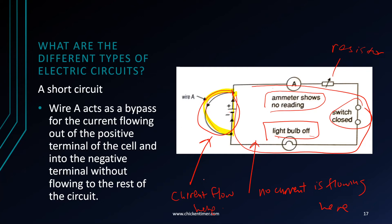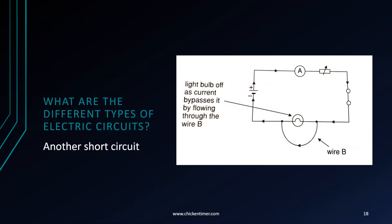Usually in short circuits the current is very high. Here is another short circuit example — can you identify the path where the current flows even though the light bulb is off? Use the pen or highlighter function to highlight the path where the current flows. What happened is the current flows through wire B. So this is also a short circuit.